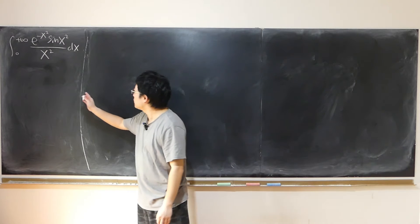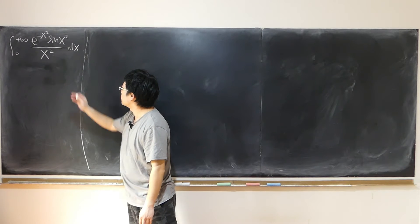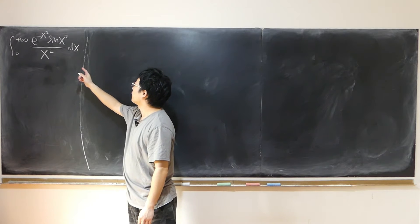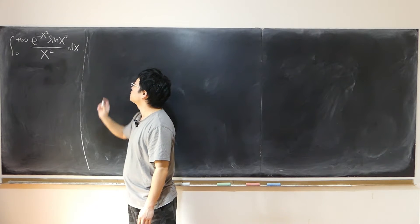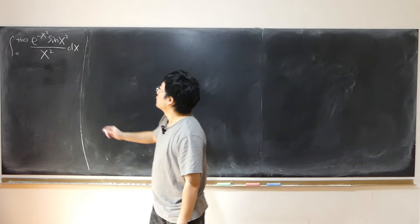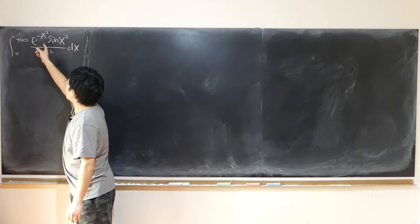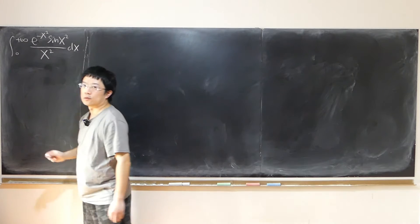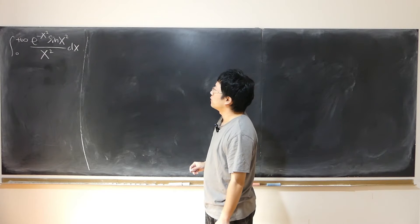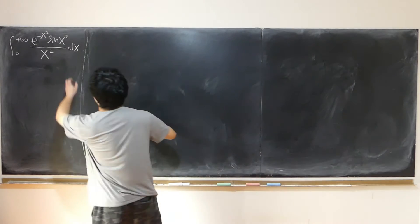We have this intimidating integral from 0 to positive infinity of e to the negative x squared times sine x squared over x squared. This part we're familiar with — e to the negative x squared — that's the Gaussian integral. So now I want to perhaps get rid of x squared at the bottom. That's my motivation.